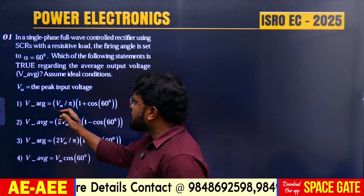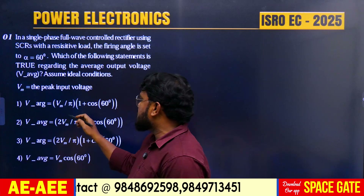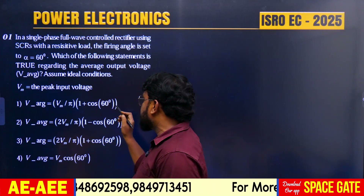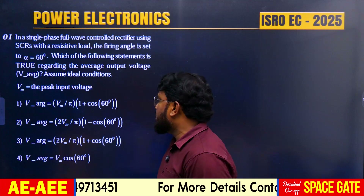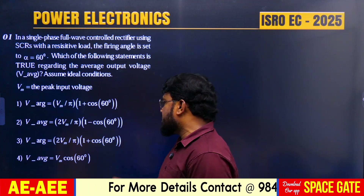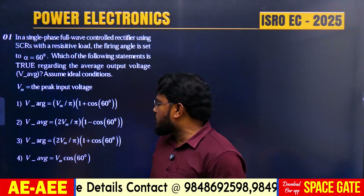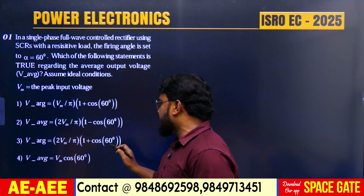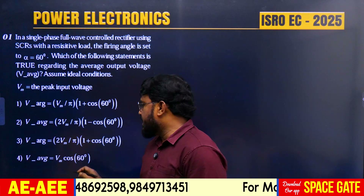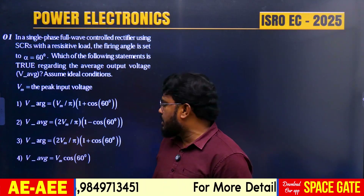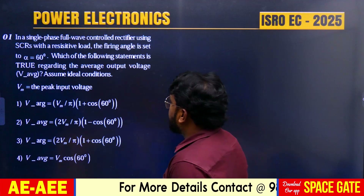The options are: Option 1 — V_average = Vm/π × (1 + cos 60°); Option 2 — V_average = 2Vm/π × (1 − cos 60°); Option 3 — V_average = 2Vm/π × (1 + cos 60°); Option 4 — V_average = Vm × cos 60°.